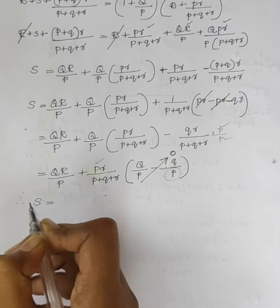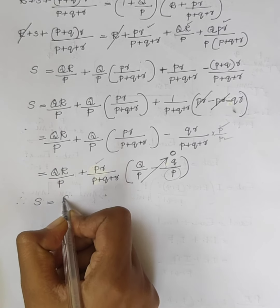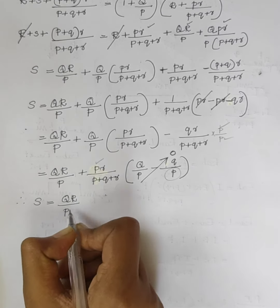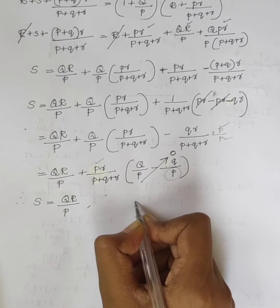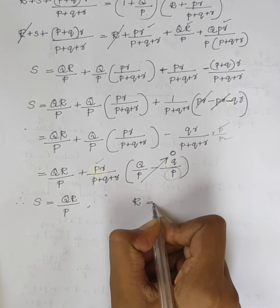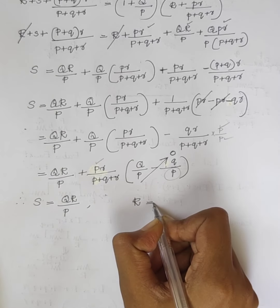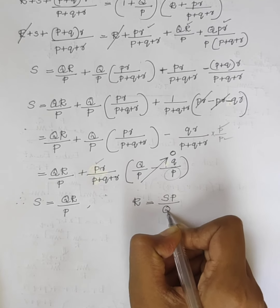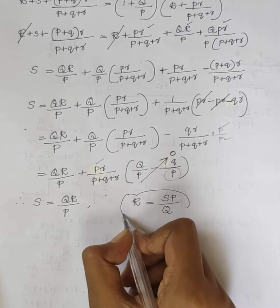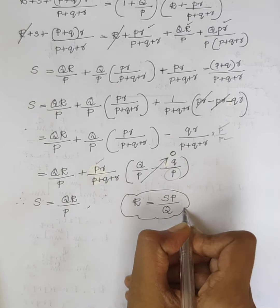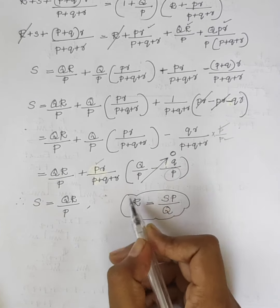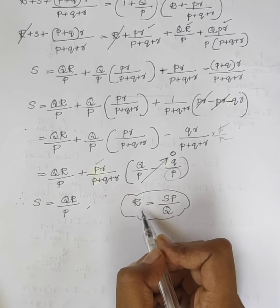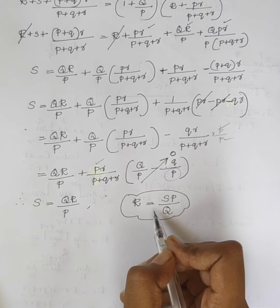Using this equation R = SP/Q, we can find out the value of the unknown resistance R. Thank you.